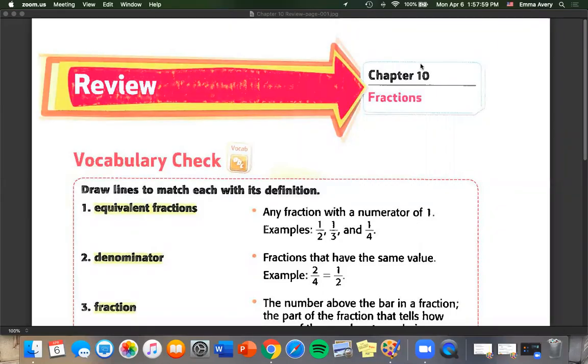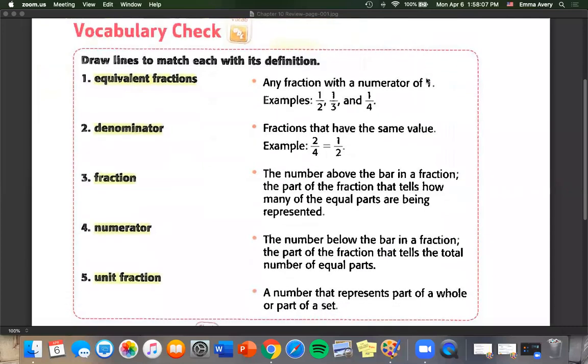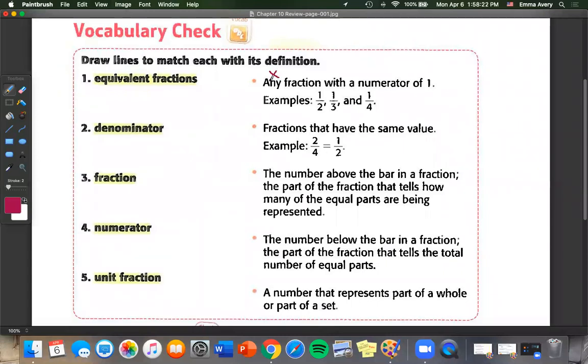Today we are doing the last part of Chapter 10. We're doing Chapter 10 review. Let's start with the vocabulary. We're going to draw lines to match each with its definition. Let's start with one, equivalent fractions. Let's go through our examples. Any fraction with the numerator of one. No, that doesn't make sense for equivalent fractions.